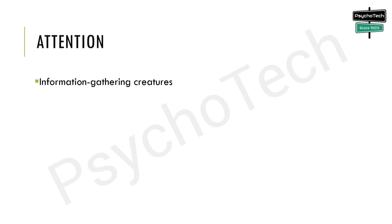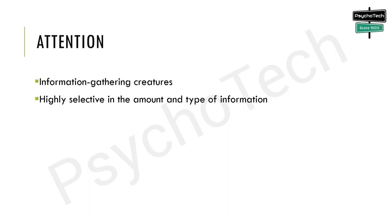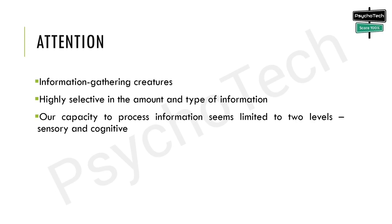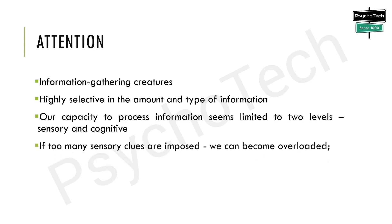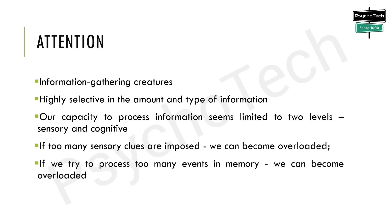Next we will discuss about attention. Although we are information-gathering creatures, under normal circumstances we are also highly selective in the amount and type of information to which we attend. Our capacity to process information seems to be limited at two levels: first is sensory and second is cognitive. If too many sensory clues are imposed upon us at any given time we can become overloaded; if we try to process too many events in memory we can also become overloaded, which may cause a breakdown in performance.